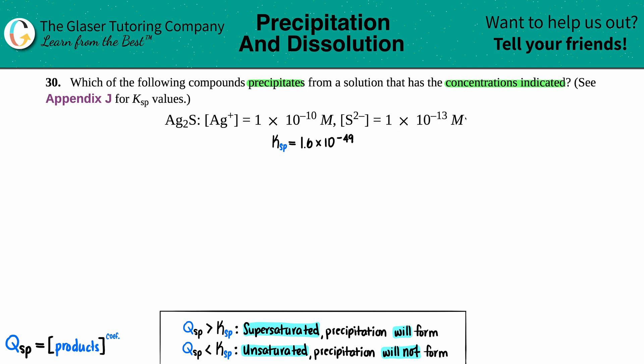We just have to figure out from these molarities or concentrations, are we going to form a precipitate? Meaning, is there going to be some solid that remains in the solution that did not dissolve? Think of it like if you add way too much sugar into your coffee or tea, some of it is not going to dissolve. It's going to sink to the bottom—that's a precipitate, just the stuff that didn't get dissolved in solution.